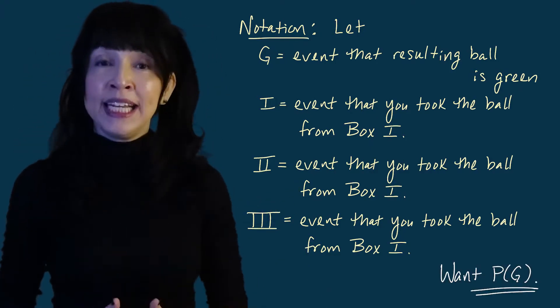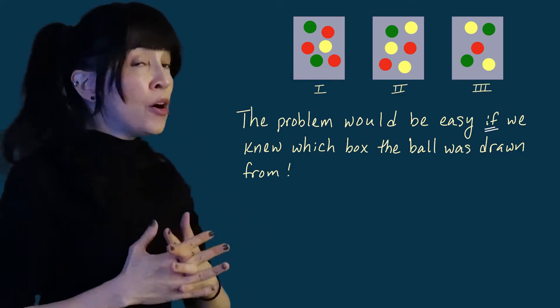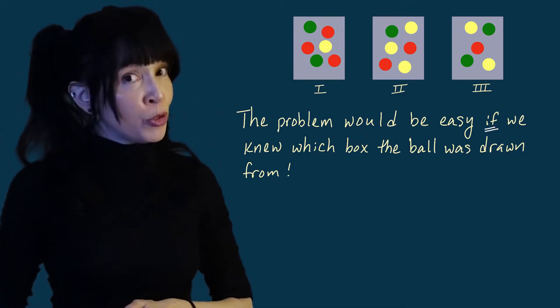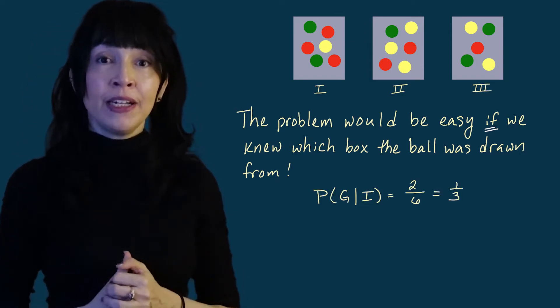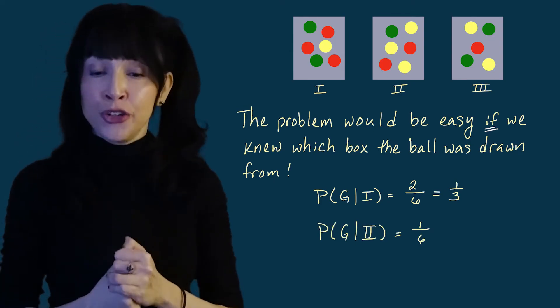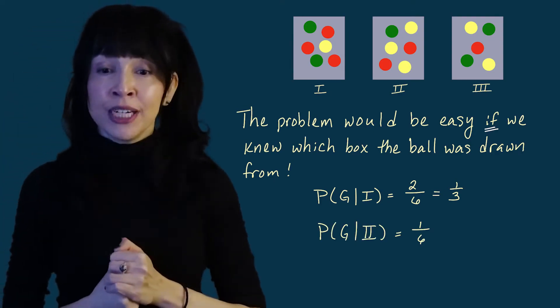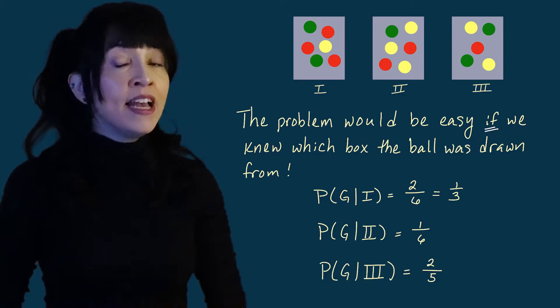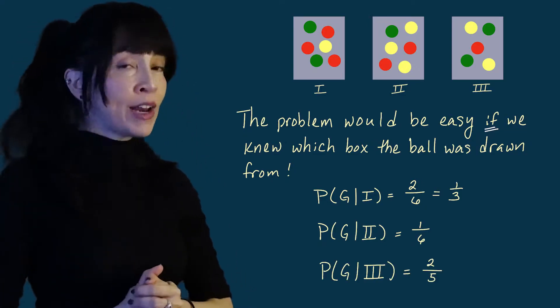As I said, the probability would be easy if we knew which box the ball came out of. So just looking at these boxes, given we chose a ball from box one, the probability is green is two out of six. Given we chose a ball from box two, the probability of a green is one out of six. And given we chose box three, the probability of a green is two out of five.